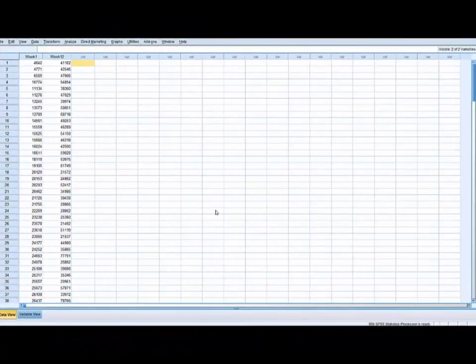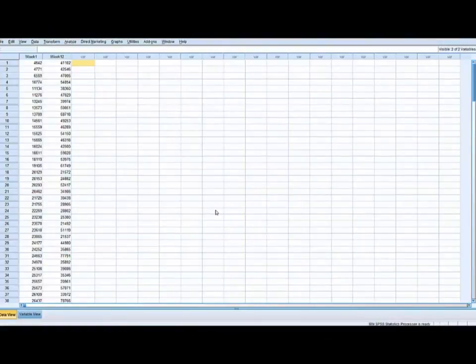Here's our data set again. It's the same data set that we used in the previous video. We have 200 subjects and the number of steps taken in week 1 and the number of steps taken in week 12. We're now going to analyze these data as if they were a one-sample study. So, we have to first create a variable because we're interested in knowing whether the difference between these two different measures at week 1 and week 12 is actually zero.